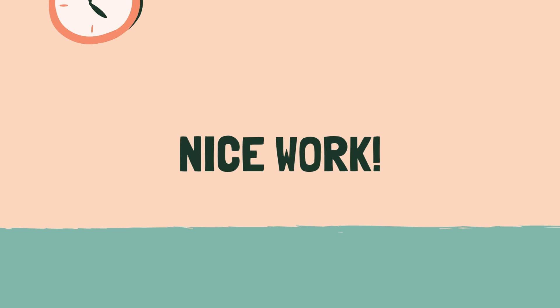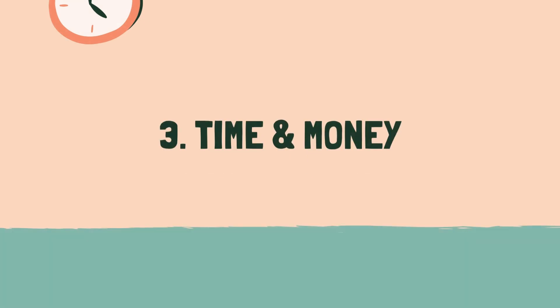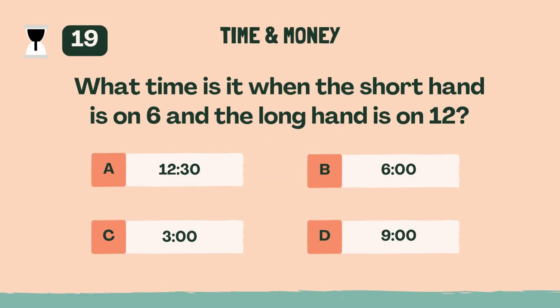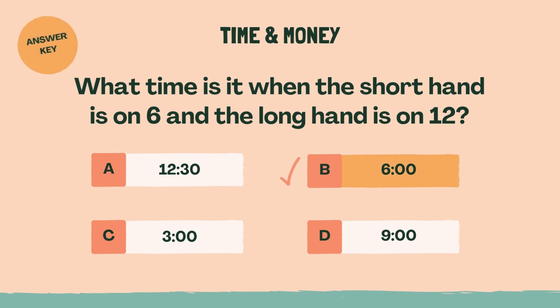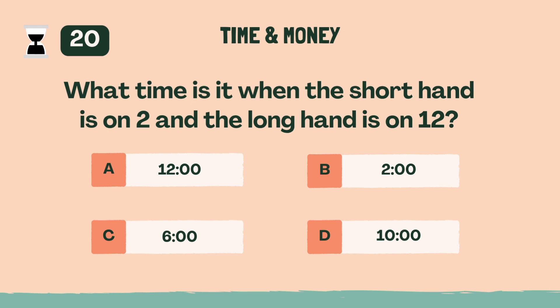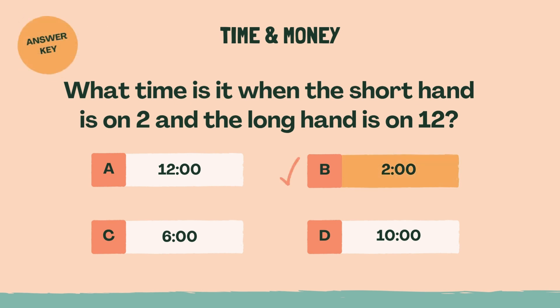Nice work. Time for the next category. Category 3: Time and Money. 3, 2, 1, go! What time is it when the short hand is on 6 and the long hand is on 12? B, 6 o'clock. What time is it when the short hand is on 2 and the long hand is on 12? B, 2 o'clock.